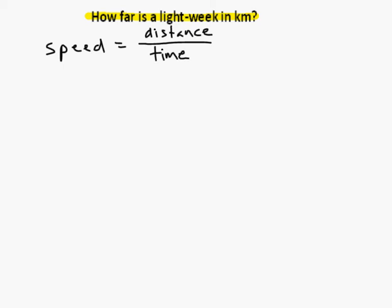The speed we're talking about is the speed of light. The time is one week, and then the distance is one light-week, because a light-week is the distance that light can travel in one week. So if we're trying to solve for distance, then we want to try to get distance by itself on one side of the equation. So I'm going to start by multiplying both sides of this by time.